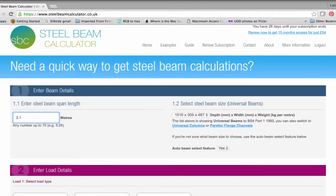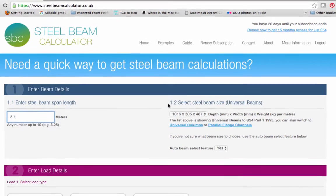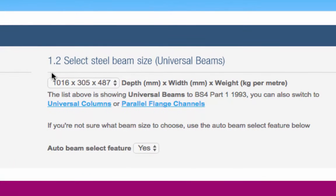Secondly, we need to know the shape and size of your steel beam. The calculator defaults to universal beams, but you can choose either universal columns or parallel flange channels instead.